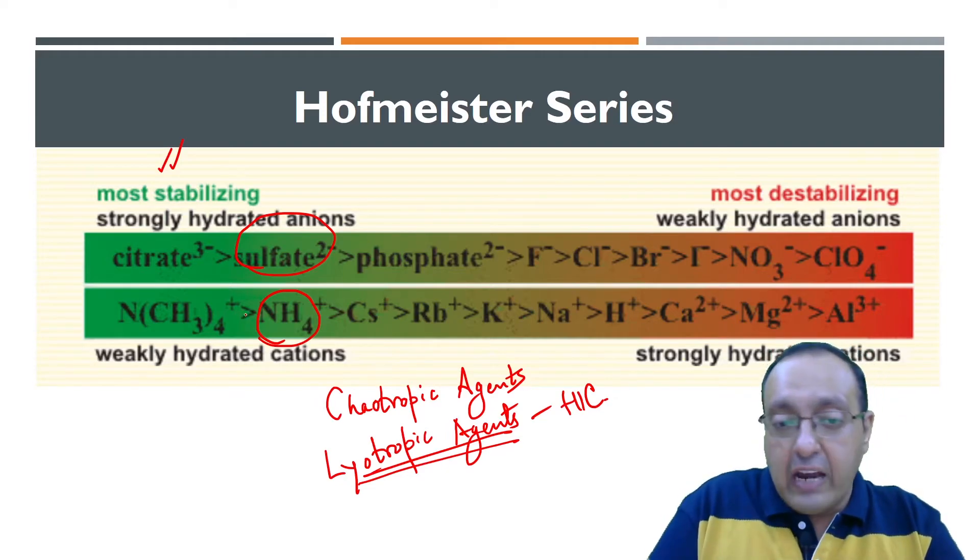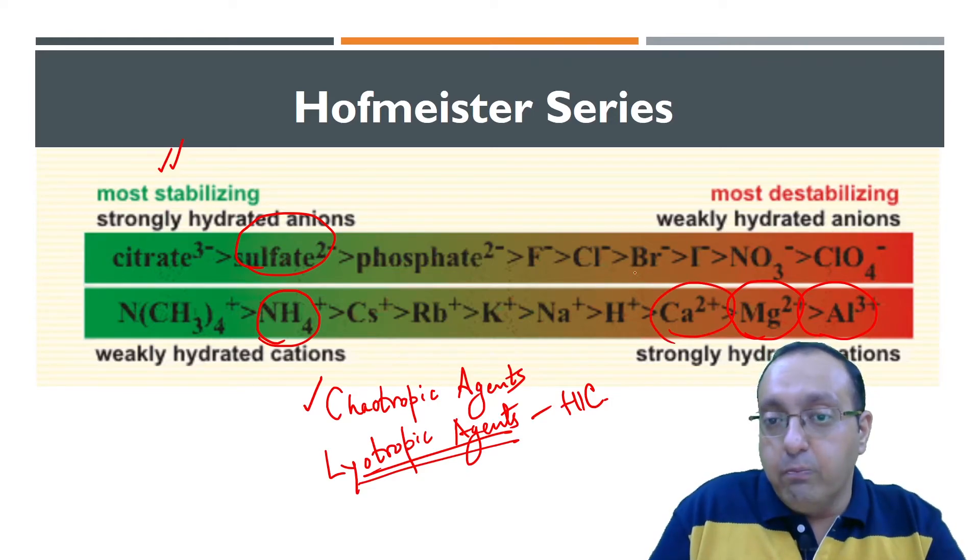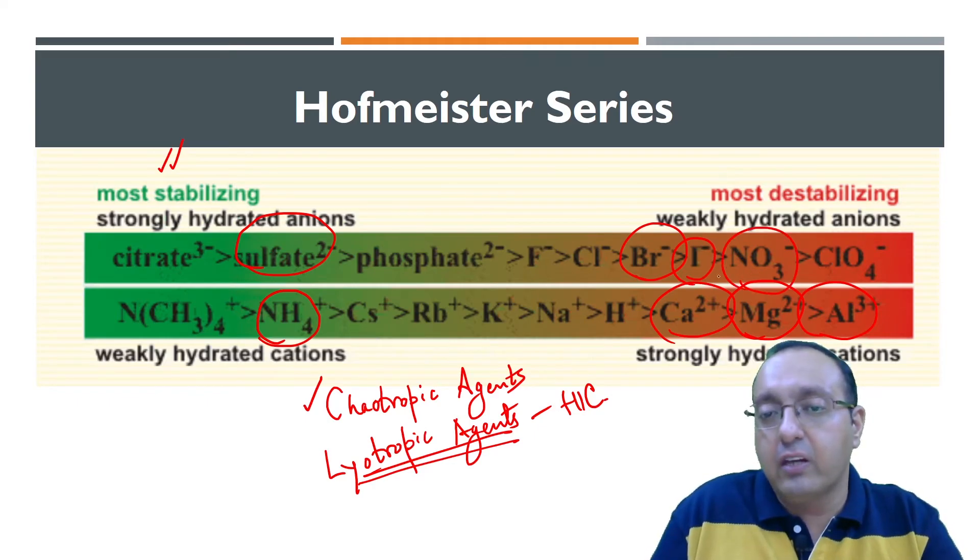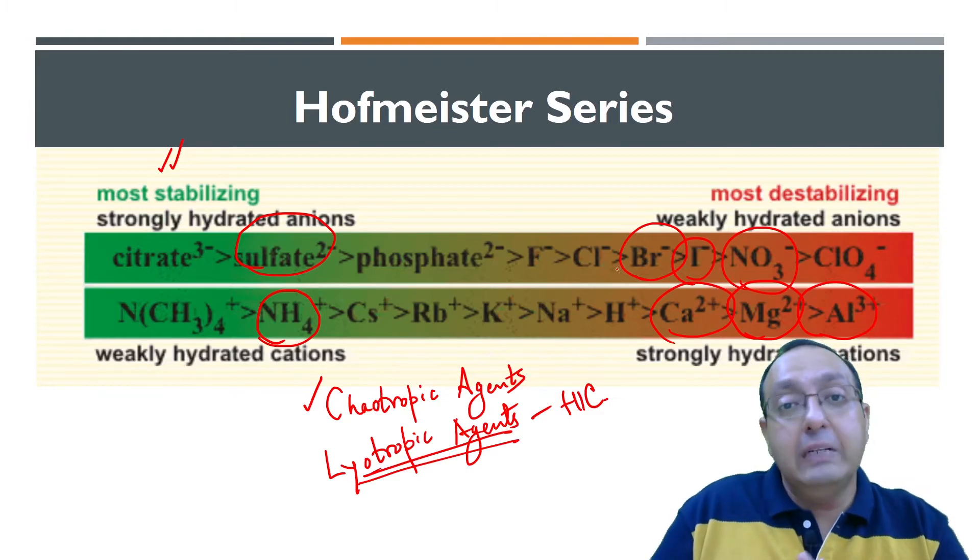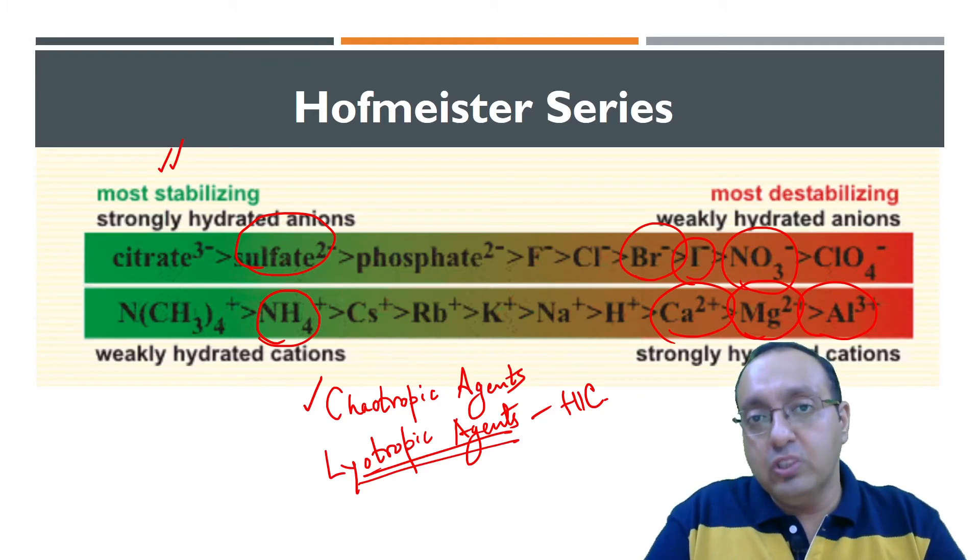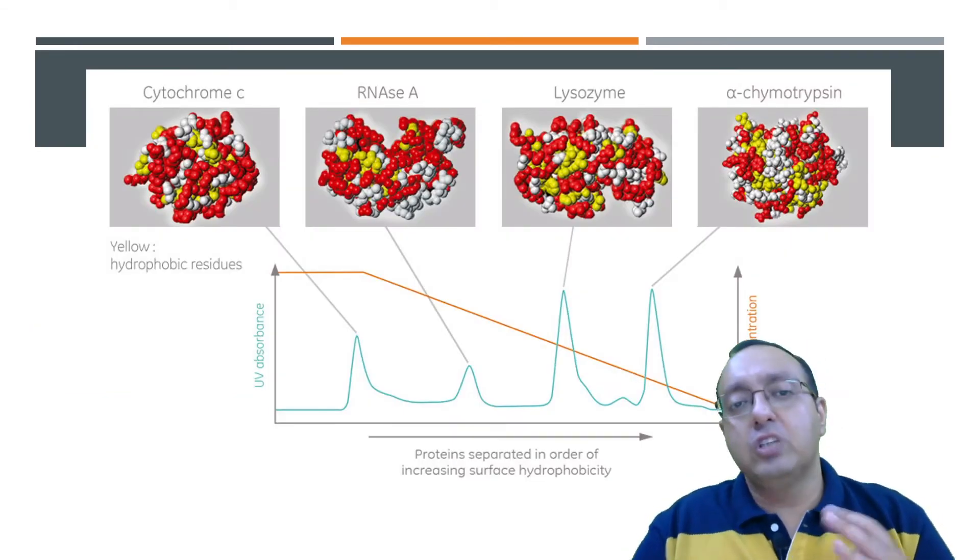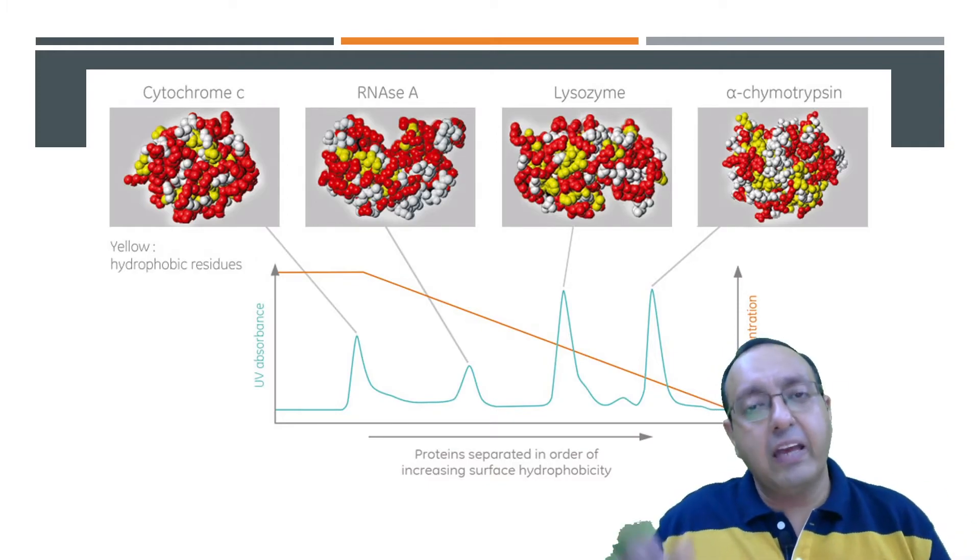In contrast to that, the chaotropic agents, for example compounds which contain magnesium, aluminium, calcium and coupled with bromide or iodide. So for example magnesium iodide or magnesium nitrate or calcium chloride. These will be destabilizing and these will be chaotropic in nature. They will destabilize the interaction of the protein to the stationary phase. So what we do is we use lyotropic agents to drive the binding and proteins which are least hydrophobic and most hydrophobic.